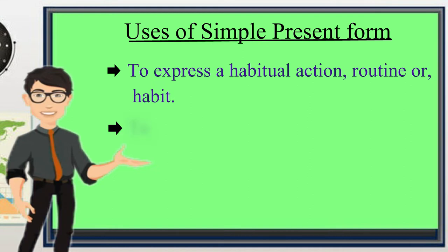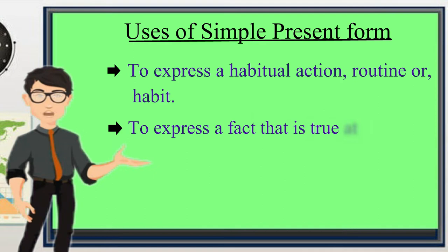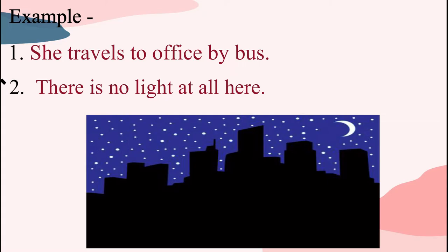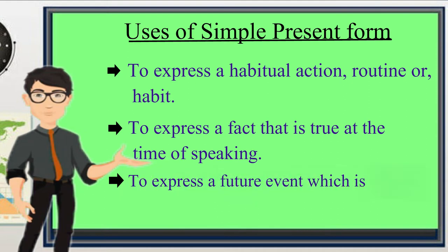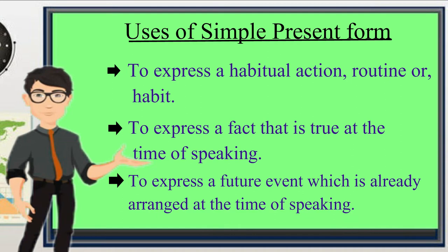Number two, to express a fact that is true at the time of speaking. Let us see this example: there is no light at all here. This sentence is expressing a fact that is true at the time of the speaker saying this. Number three, to express a future event which is already arranged at the time of speaking.